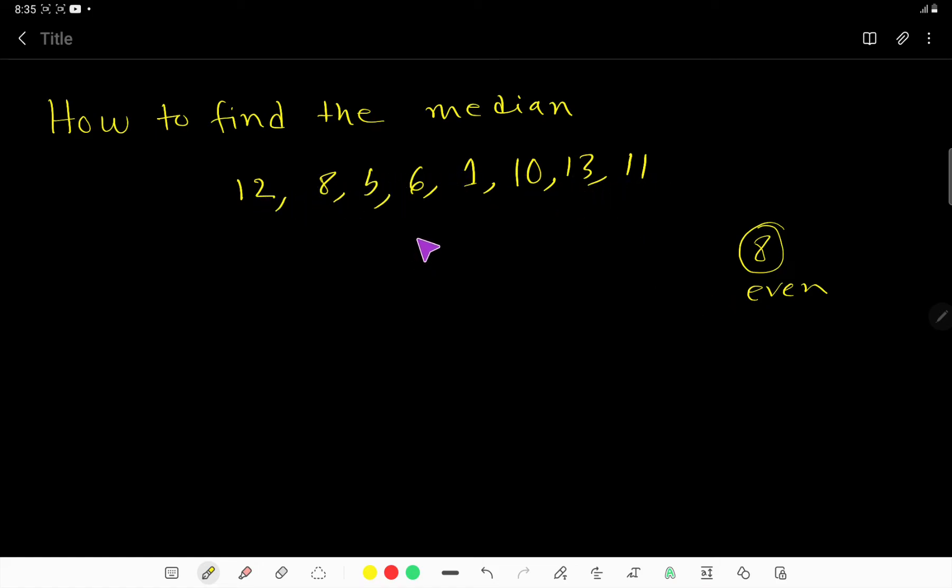To find the median, first we have to rearrange this dataset in ascending order - from lowest value to highest value. The lowest value is 1.